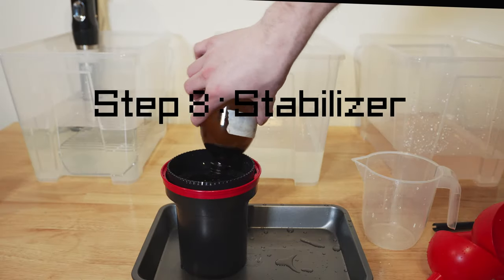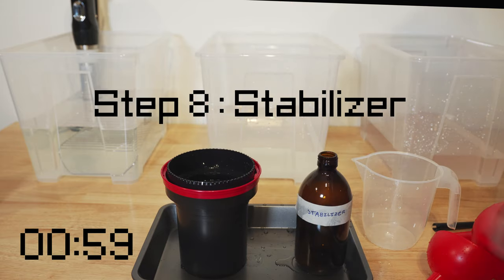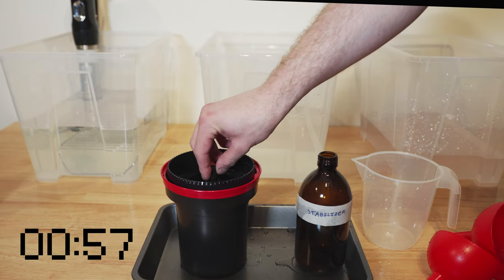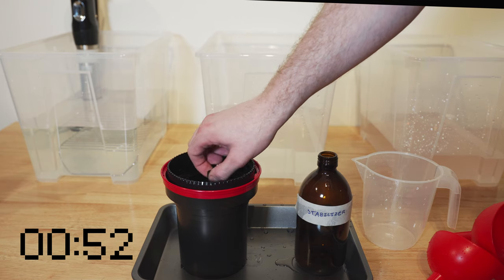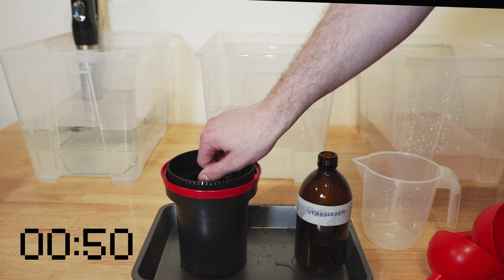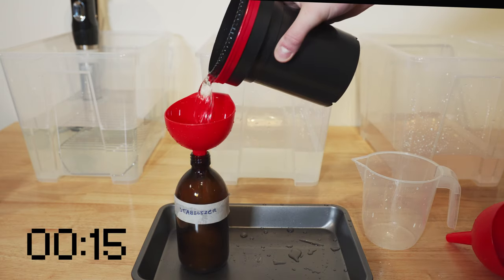So we'll pour in the stabilizer and we're going to agitate it continuously for one minute. The nice thing about the stabilizer is that you don't need to heat this chemical—this can be done at room temperature, so we don't actually have to put this into the water bath at all. So after the minute's up, we're just going to pour this back into the bottle for reuse later.